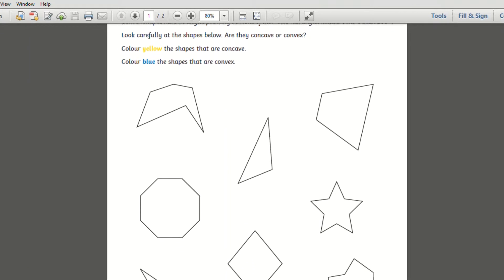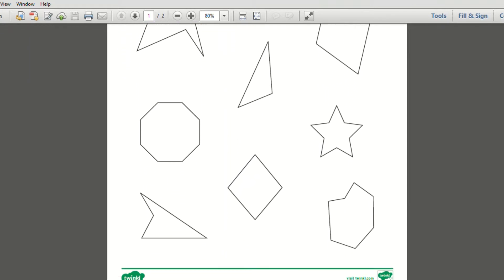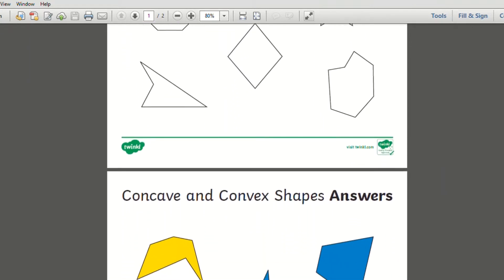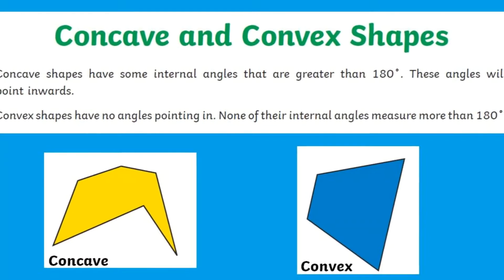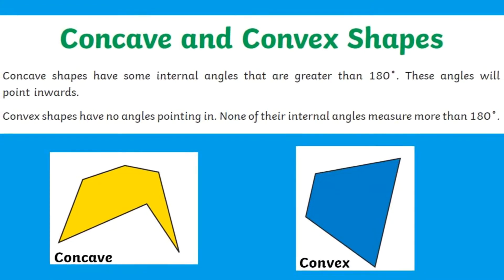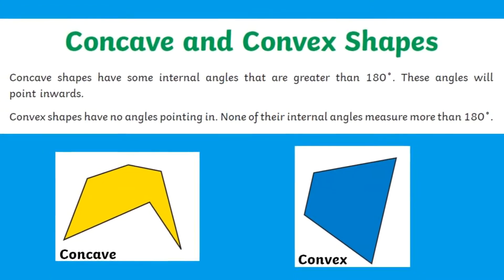This resource is perfect for children to put their knowledge to the test and practice recognizing concave and convex shapes. Concave shapes have internal angles that are greater than 180 degrees. These often point inwards and convex shapes have no angles pointing in.